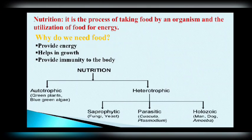There are mainly two types of nutrition: one is autotrophic nutrition and the second is heterotrophic nutrition. We will discuss autotrophic and heterotrophic nutrition in detail.